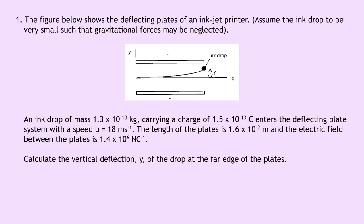In our one and only example it says that the figure below shows the deflecting plates of an inkjet printer. Assume the ink drop to be very small such that gravitational forces may be neglected. An ink drop of mass 1.3 times 10 to the minus 10 kilograms carrying a charge of 1.5 times 10 to the minus 13 coulombs enters the deflecting plate system with a speed u of 18 meters per second.